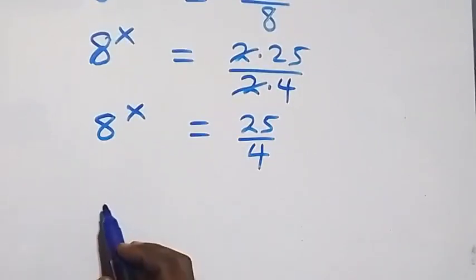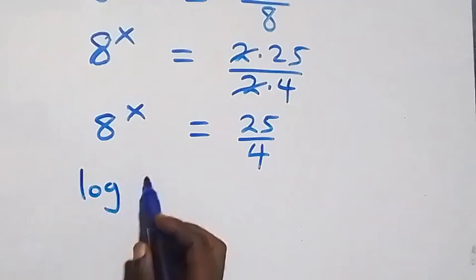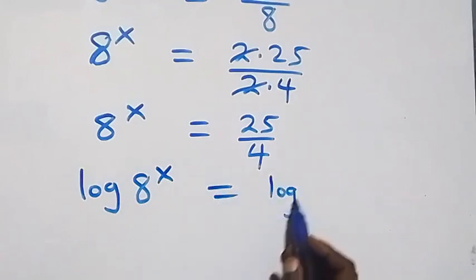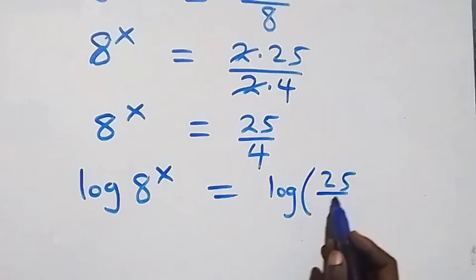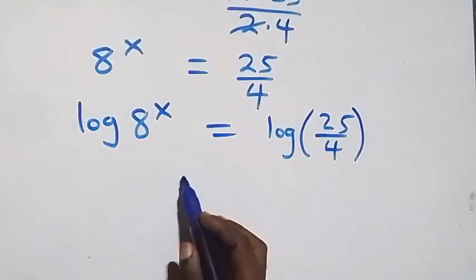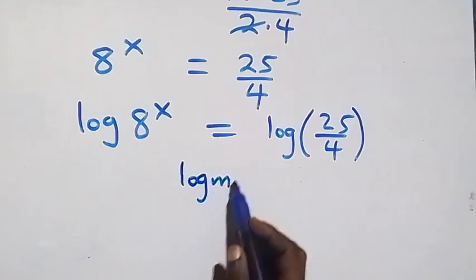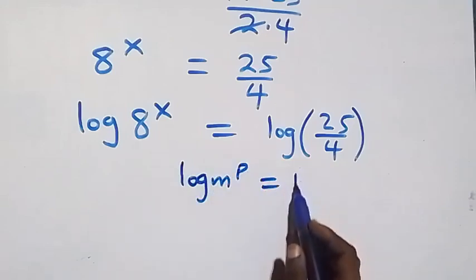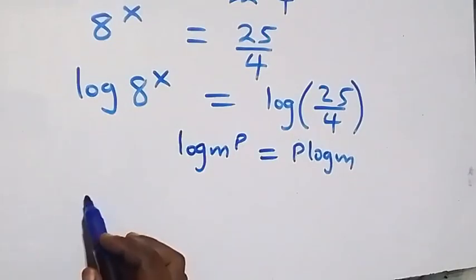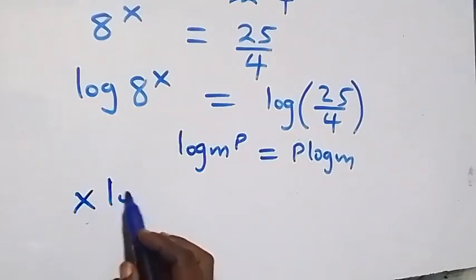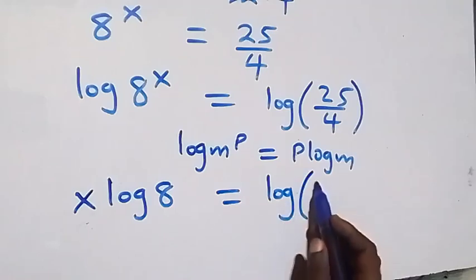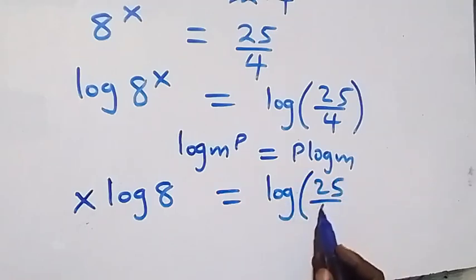We take the log on both sides: log of 8 raised to power x equals log of 25 over 4. Then we apply the power law of logarithms — log m raised to power p equals p log m — so this becomes x log 8 equals log 25 over 4.